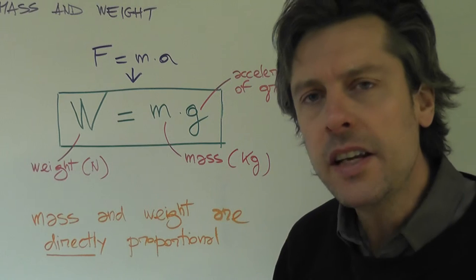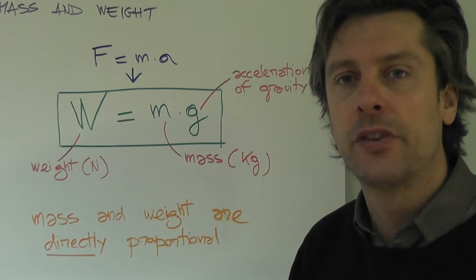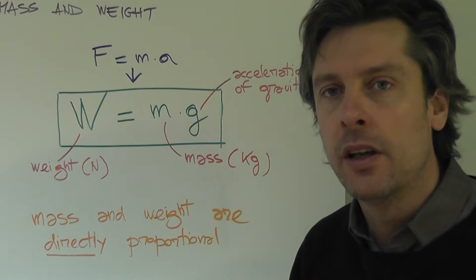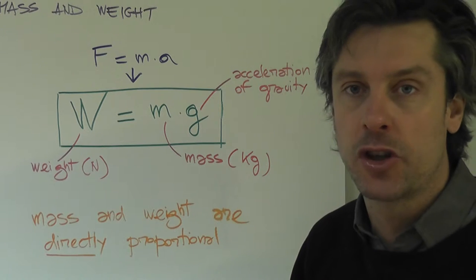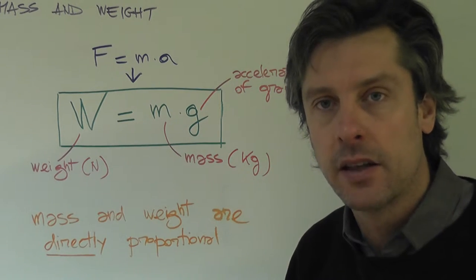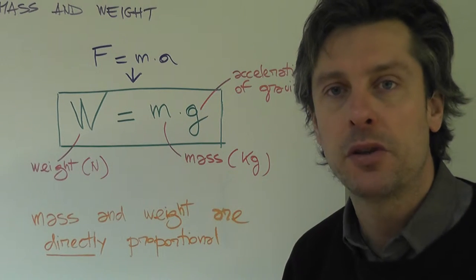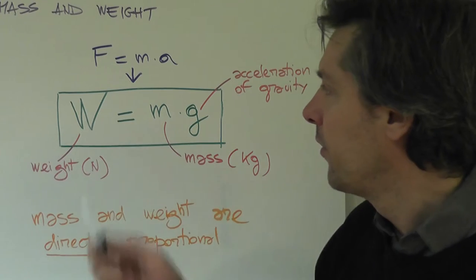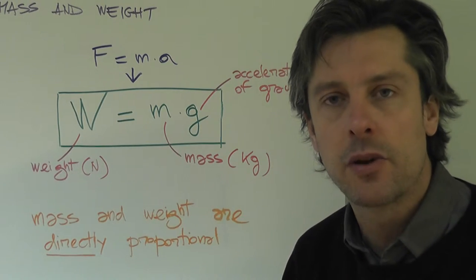So what's the link between mass and weight? Why are they often confused one with the other? And the answer is pretty simple because mass and weight depend on each other. Actually weight depends on an object's mass. And the relationship comes out directly from Newton's second law of motion. If you remember force is equal to mass times acceleration.